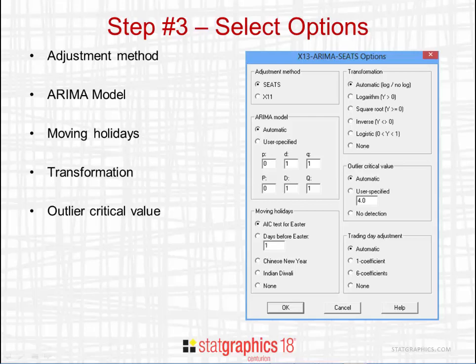X13 ARIMA SEATS has a built-in test for outliers. You can turn it on or off with the outlier critical value field. The program runs a z-test on any unusual values that look like outliers. It will remove the points from the fit if they exceed a particular value of z. You can either specify that value or have the program automatically pick the critical value based on the number of observations in the series.